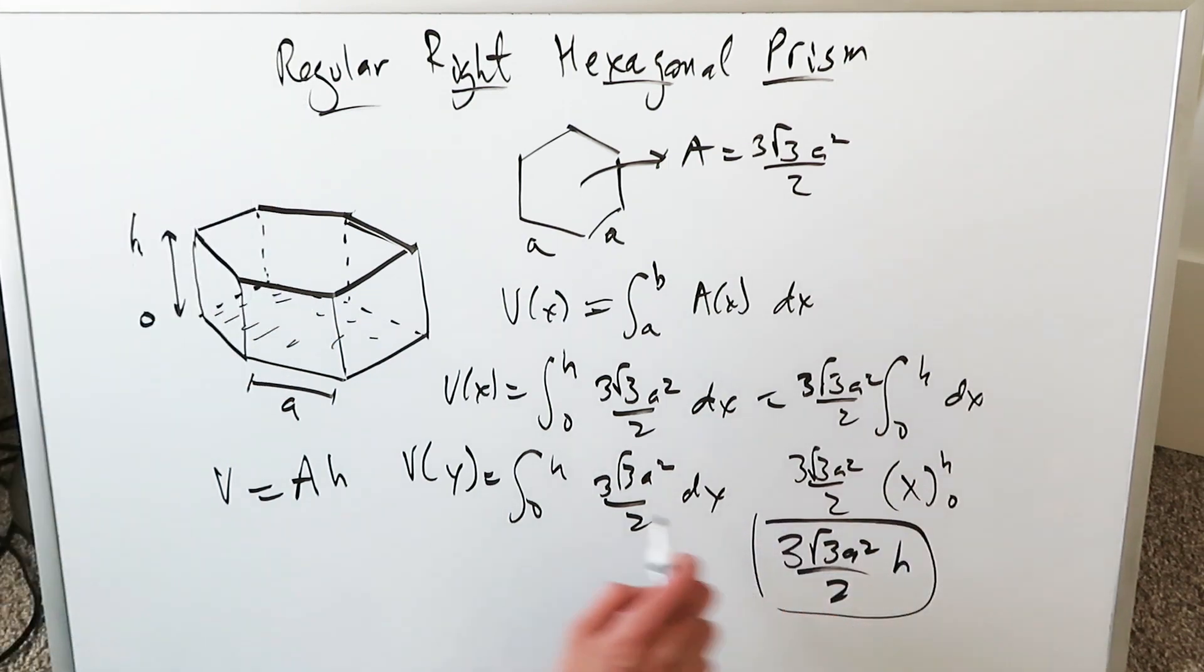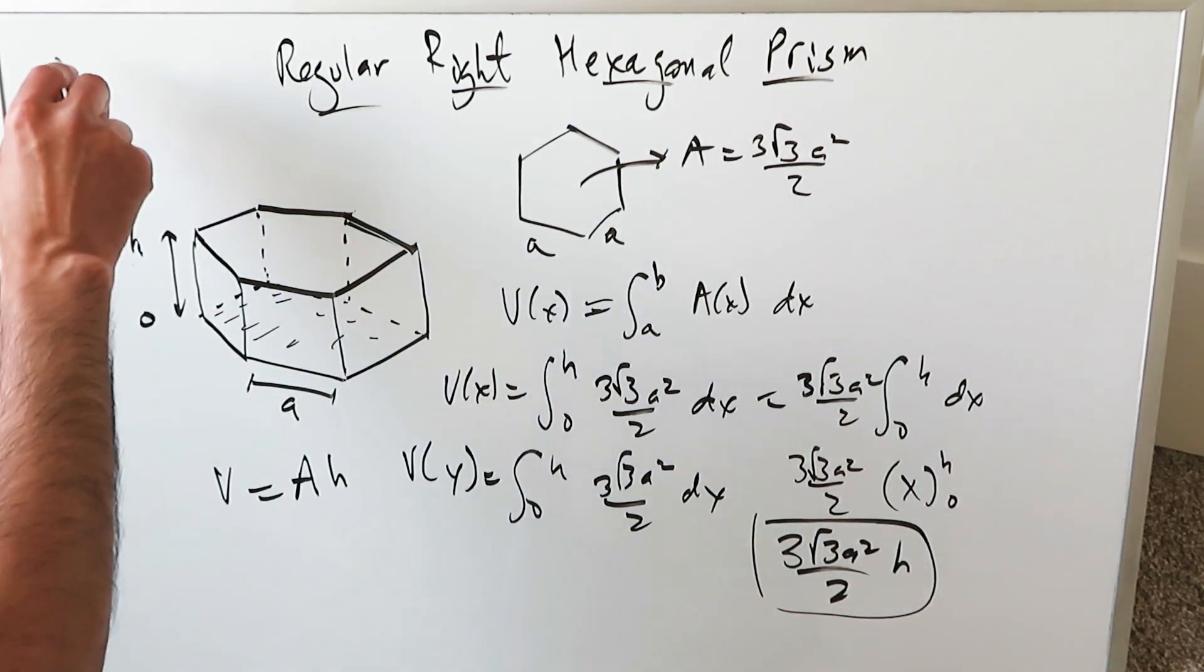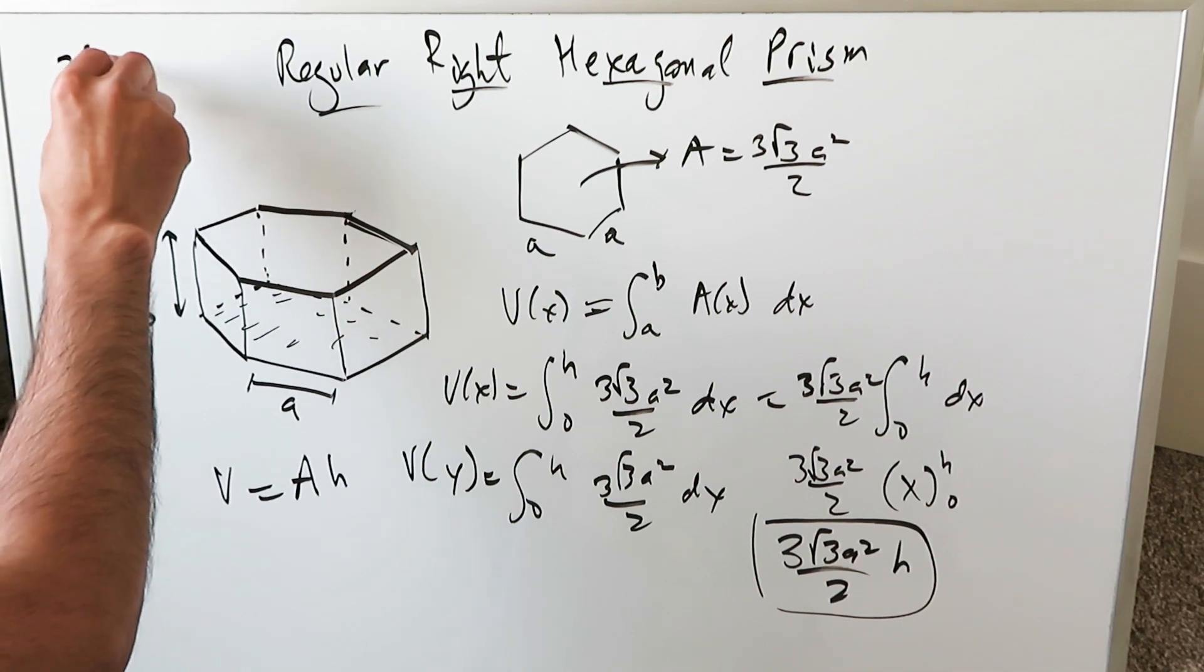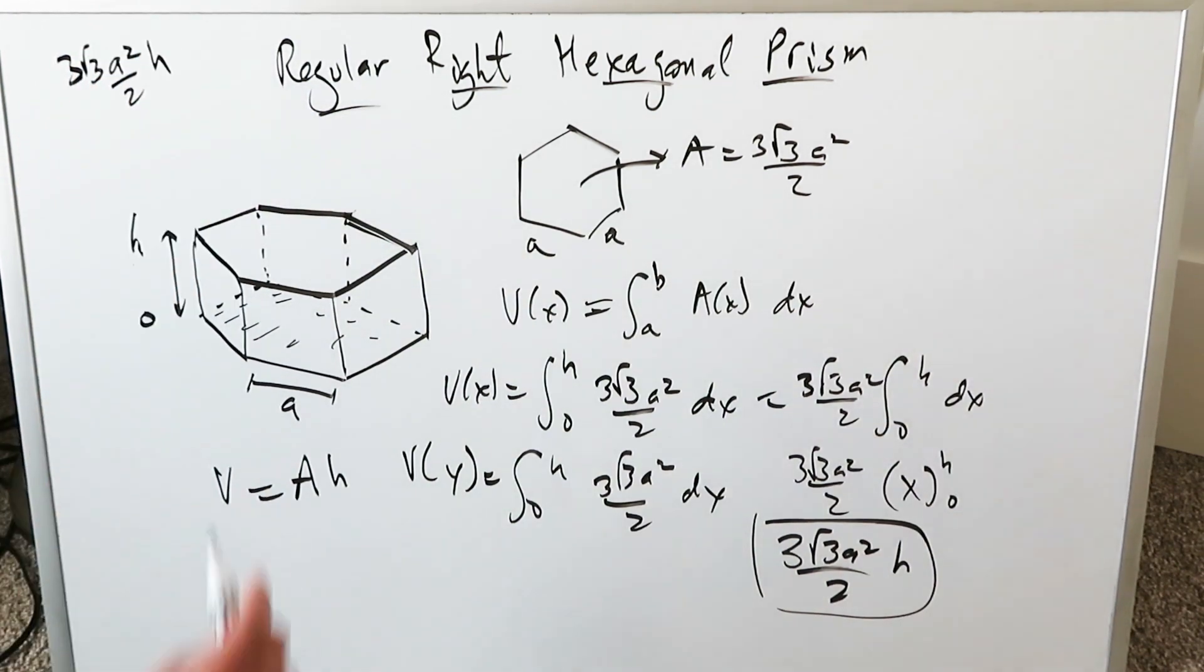That right here is your volume formula. That's all there is to it. 3 root 3 A square over 2 H is the volume of a hexagonal prism, right regular hexagonal prism, and it's easy.